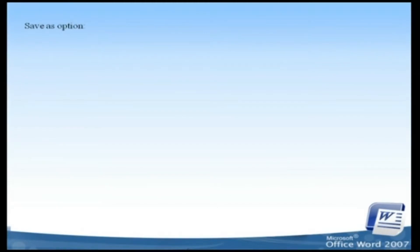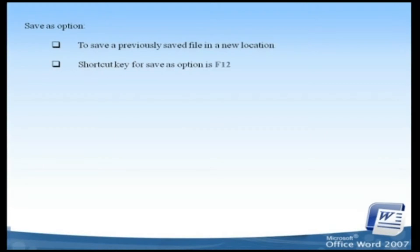Save As option. To save a previously saved file in a new location or with a new name, you have to use the Save As option. The shortcut key for the Save As option is F12. The Save As option lets you save your file with a new name when you use this command.